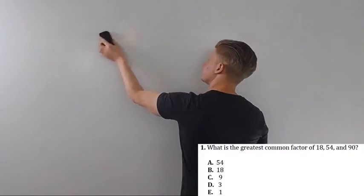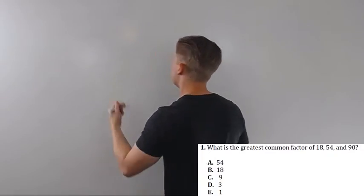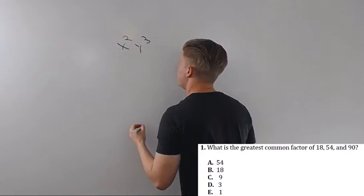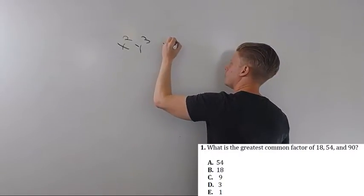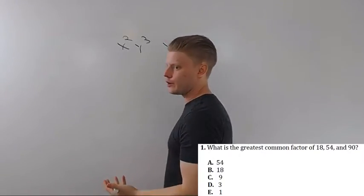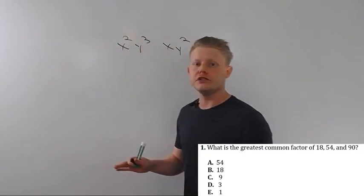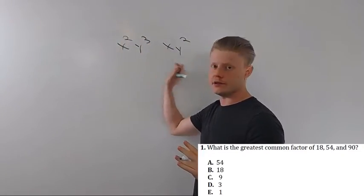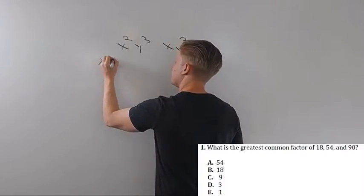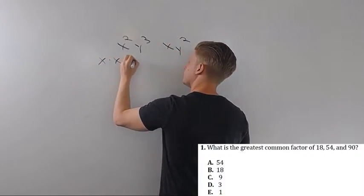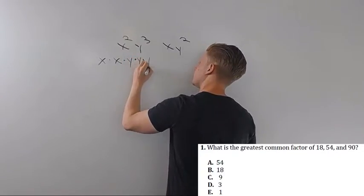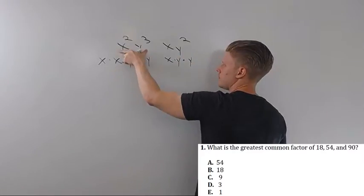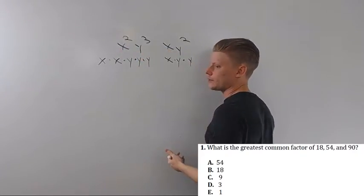So let's say I had something like x squared, y cubed, and x, y squared. And I wanted to find the greatest common factor. Well, just for explanation, I'm going to write these out. I'm going to expand them both out. Not going to change anything. But I'm going to write them out with all their x's and all their y's. And that's what I've got. This is the same as this. This is the same as this. Nothing's changed.